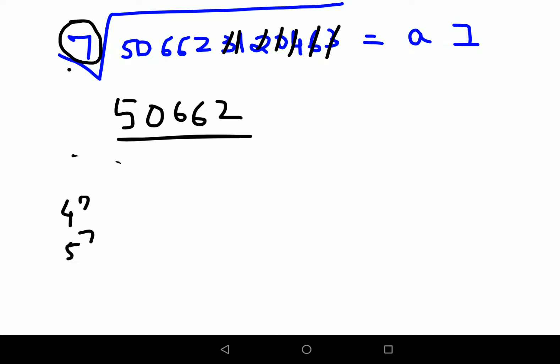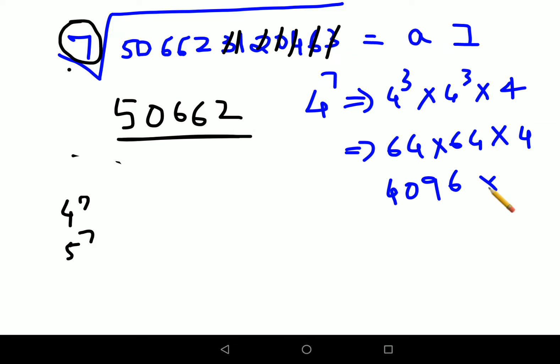So we will find out what will be the value for 4. So again, 4 raised to 7 can be written as 4 cube into 4 cube into 4. That gets you 64 into 64 into 4. So now 64 into 64, that is 64 square gets you 4096 into 4. That gets you 4, 2 carry, 37, 38 and 3 carry. So 3 and 1, 6, 3, 8, 4. So basically, it is 16,384. So this is the value for 4.